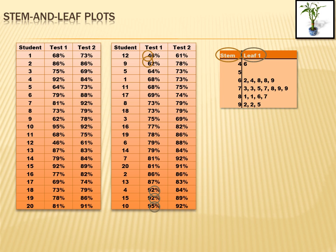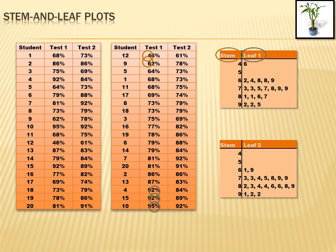Now let's do test 2. We'll remove the bars that were hiding it and create a stem and leaf plot for test 2. In test 2, there are no scores in the 40s or 50s, and just two scores in the 60s: a 61 and a 69. In the 70s there are a bunch of scores: 73, another 73, a 74, a 75, a 78, and two 79s. So now I've created two stem and leaf plots — one for test 1 and one for test 2.